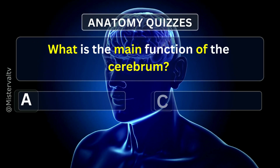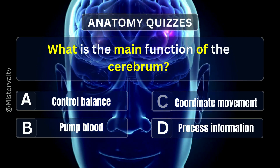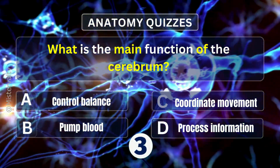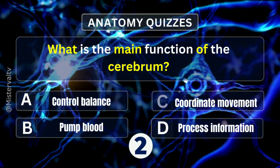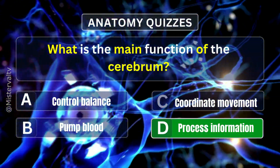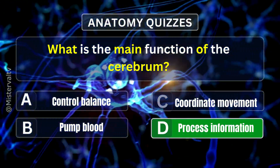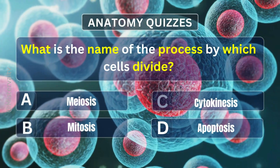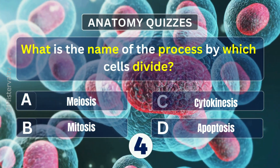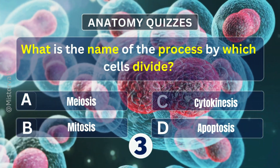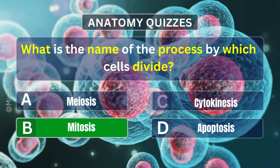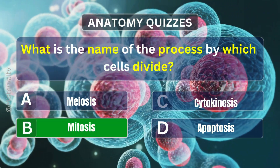What is the main function of the cerebrum? Answer. D. Process information. What is the name of the process by which cells divide? Answer. B. Mitosis.